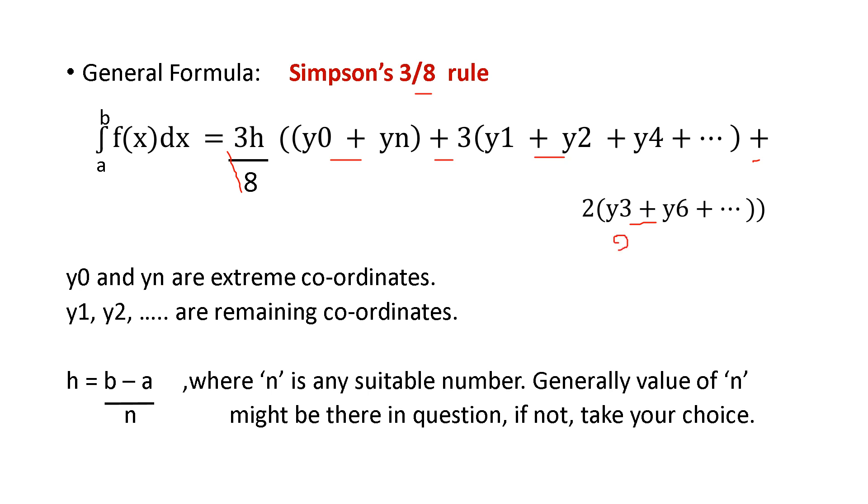That is multiples of 3. Here are the multiples of 3 you have to take. And then here are the other values. This is for Simpson's 3 by 8 rule. y0 and yn are the extreme coordinates. y1, y2, y3 and all are the remaining values. So, h is the same formula. h is equal to b minus a by n.